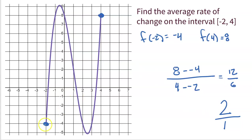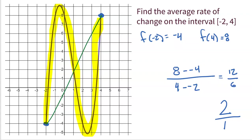You could say two over one if you want to keep it as a fraction. But again, if we connect these points with a line — that's our secant line — even though in between negative two and four this function is changing a lot, going up really fast, then dropping really fast, then going back up really fast, the average rate of change from negative two to four is two. And that is the slope of the line that connects them.